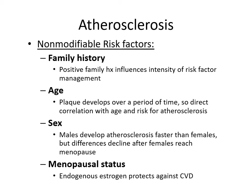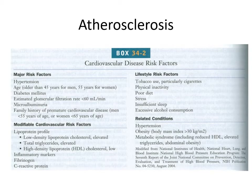Looking at non-modifiable risk factors: family history — a positive family history influences the intensity of risk factor management. Age — plaques develop over a period of time, so there's a direct correlation with age and risk for atherosclerosis. Sex — males develop atherosclerosis faster than females, but differences decline after females reach menopause. Menopausal status — endogenous estrogen protects against cardiovascular disease: testosterone increases risk and estrogen protects from risk. There's a nice cheat sheet for major risk factors, modifiable risk factors, lifestyle risk factors, and related conditions.